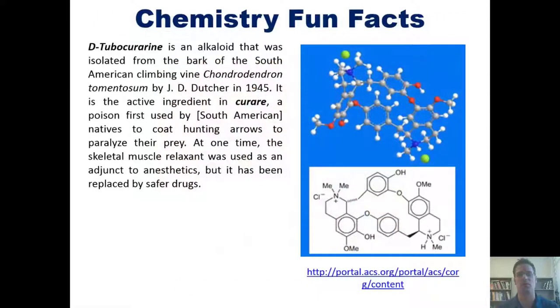And now, an interesting chemistry fun fact of the day. D-tubocurarine is an alkaloid that was isolated from the bark of the South American climbing vine Chondrodendrum tomentosum by J.D. Dutcher in 1945.